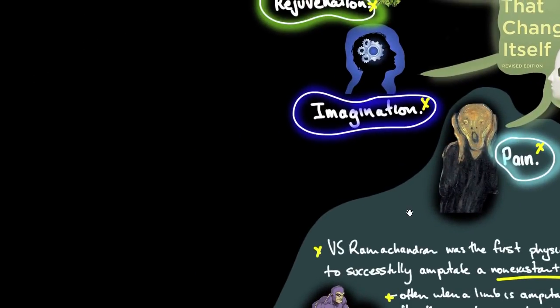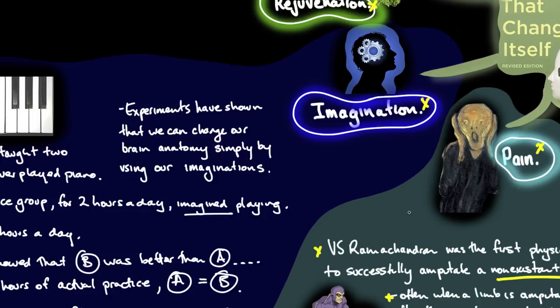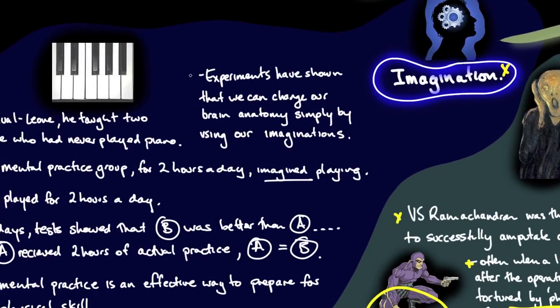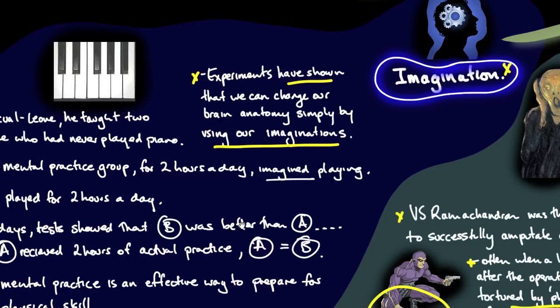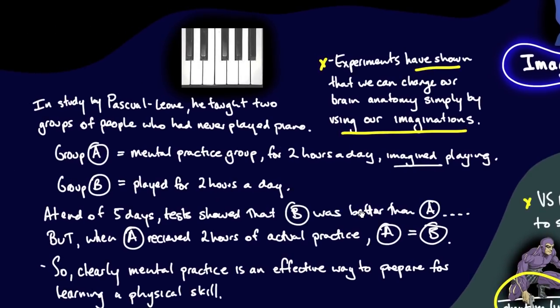Next topic, let's look at imagination. Let's look at a few experiments. Experiments have shown that we can change our brain anatomy simply by using our imaginations. Let's bring some of that to life.